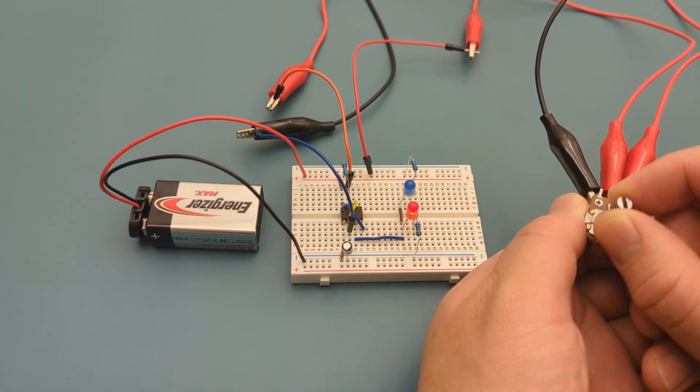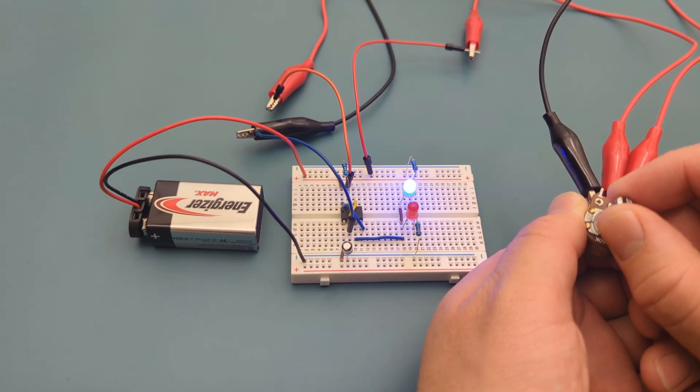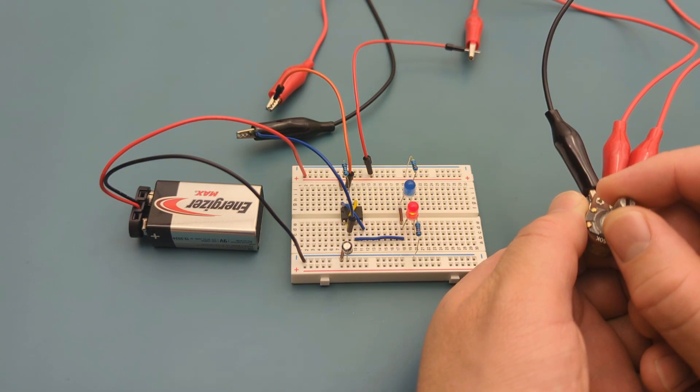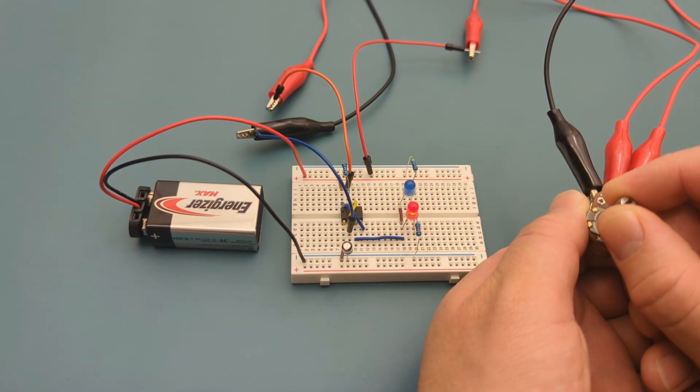Want to take it a step further? You can make the flashing speed adjustable by adding a potentiometer. Turn the knob to adjust the speed of the LED blinking. I have linked the videos in the description.